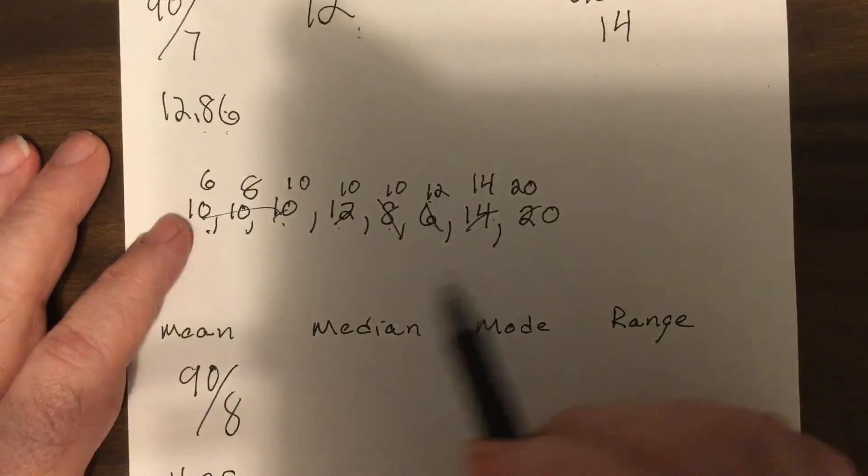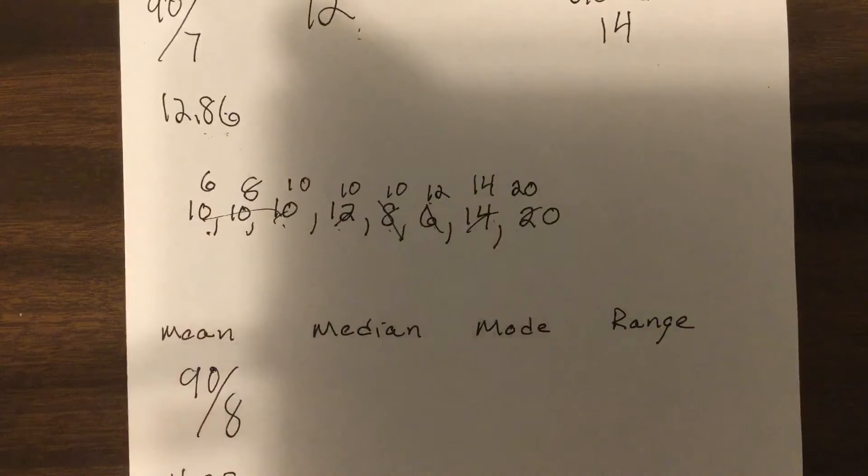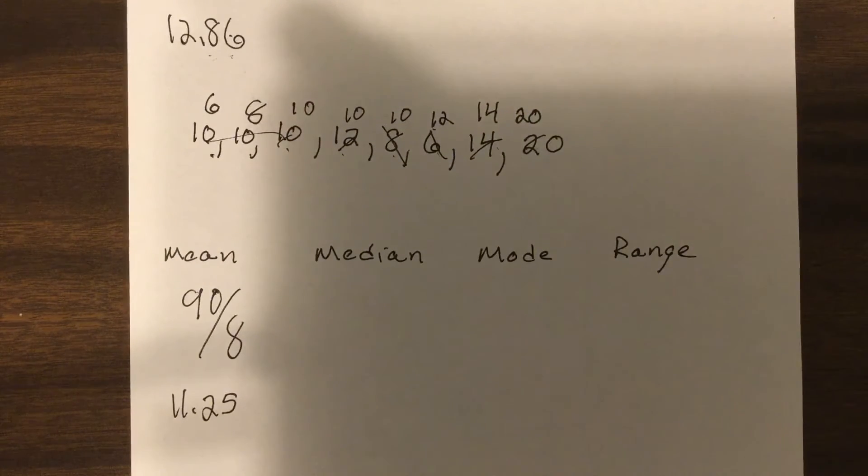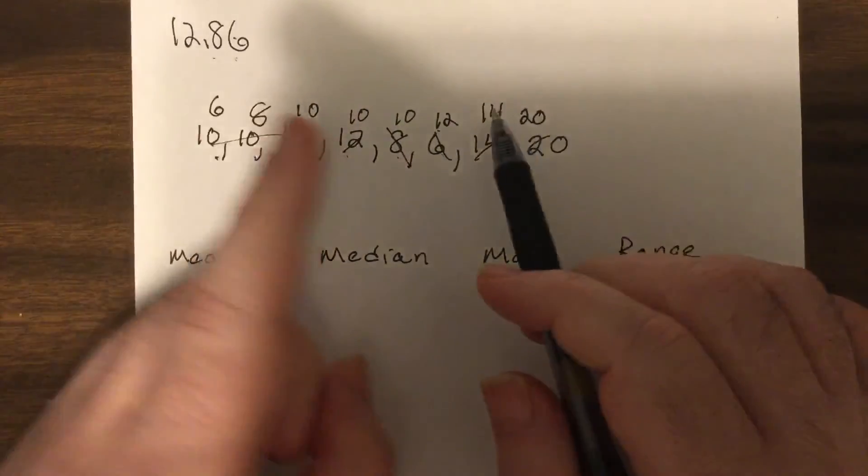Now the mean is pulled by very big numbers or very small numbers. It's called skewing the data, S-K-E-W. It means that it pulled it, where the median you're getting rid of the top and the bottom in a sense, so therefore it won't pull it in one direction.